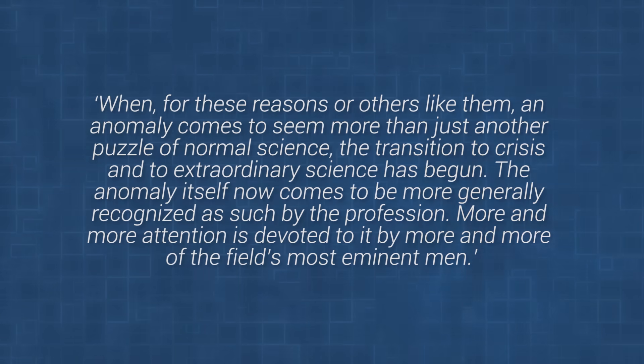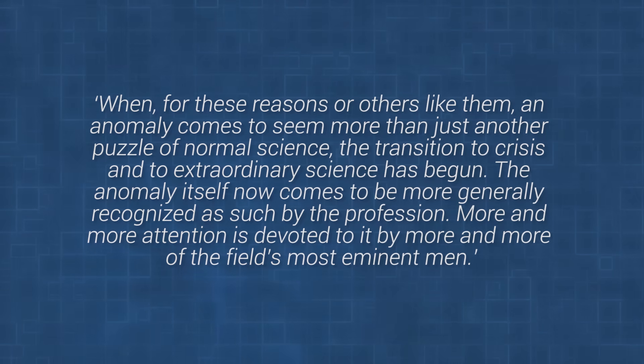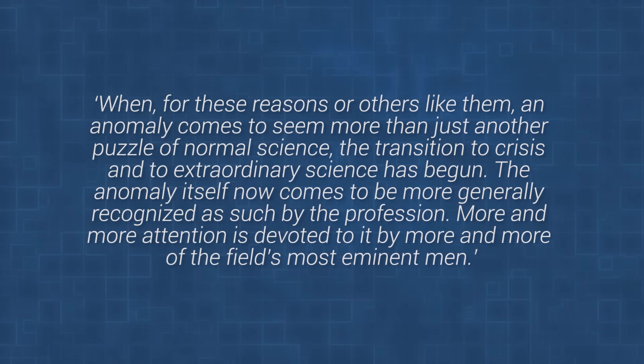An anomaly occurs when a piece of the puzzle just won't fit. This can lead to a crisis in the paradigm and a search for a new one. Increasingly problematic anomalies and a consensus that there is an anomaly leads to increased debate, different perspectives on what could change, disagreement, and a new type of experimenting. Kuhn writes that when an anomaly comes to seem more than just another puzzle of normal science, the transition to crisis and to extraordinary science has begun. More and more attention is devoted to it by more of the field's most eminent men.